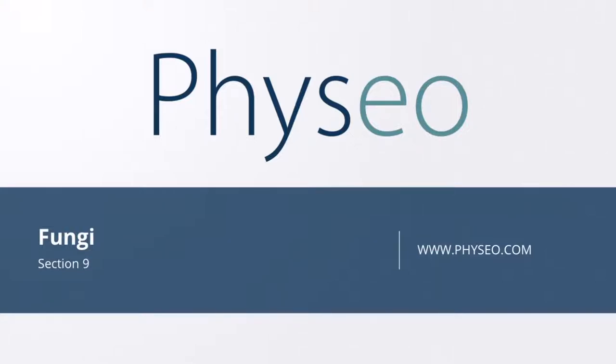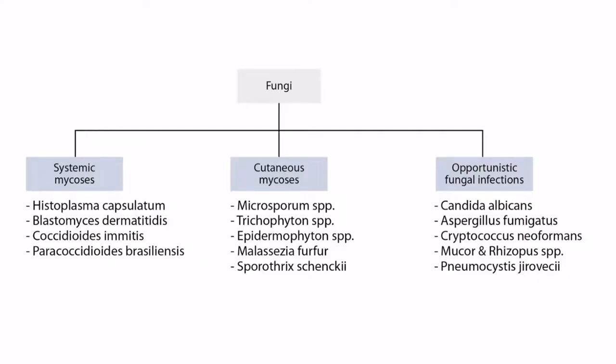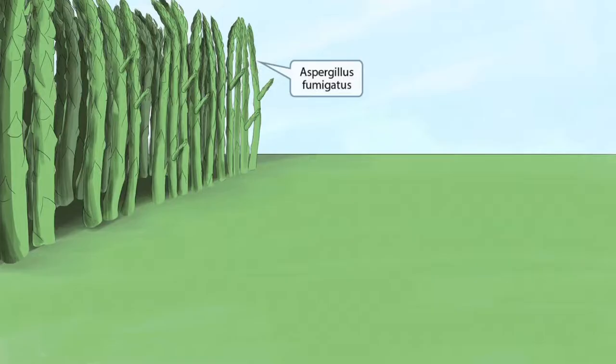Welcome to section 9 of fungi. This is our fungi overview figure. In this video, we'll be discussing Aspergillus fumigatus. This scene will take place during the time of Vietnam, but the jungles will be made of asparagus. The word asparagus sounds like aspergillus, so the asparagus jungle should help you remember that this image is all about Aspergillus fumigatus.